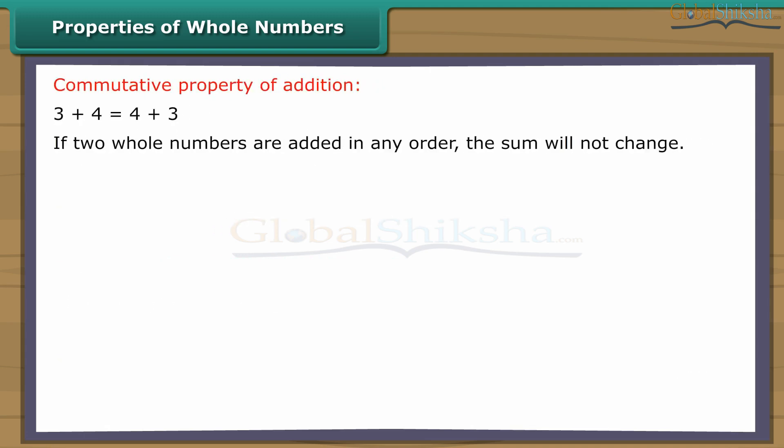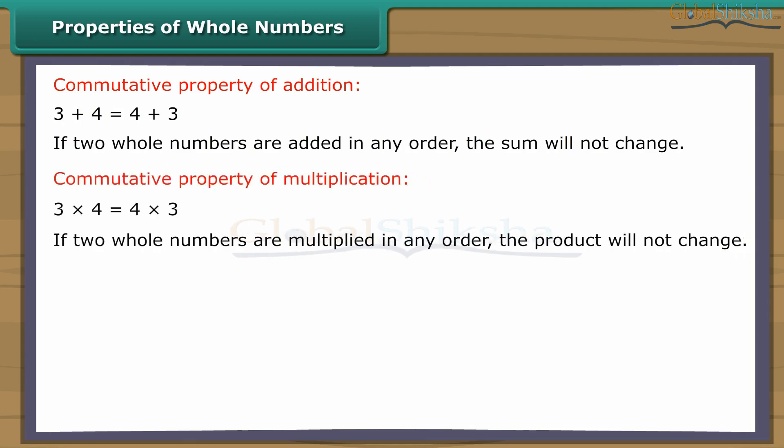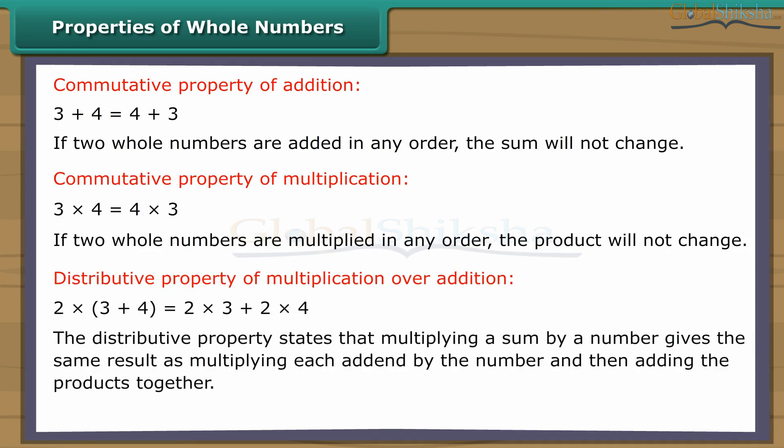If two whole numbers are added in any order, the sum will not change. If two whole numbers are multiplied in any order, the product will not change. The distributive property states that multiplying a sum by a number gives the same result as multiplying each addend by the number and then adding the products together. The above properties do not hold for subtraction and division.